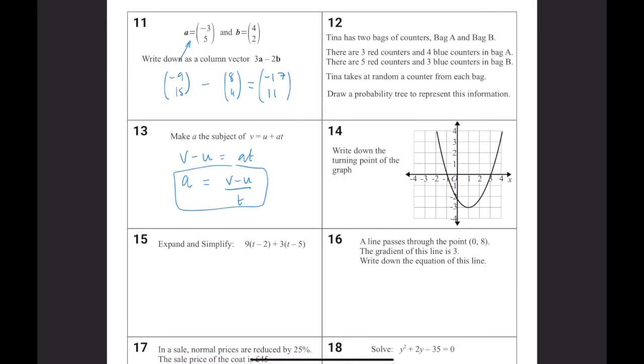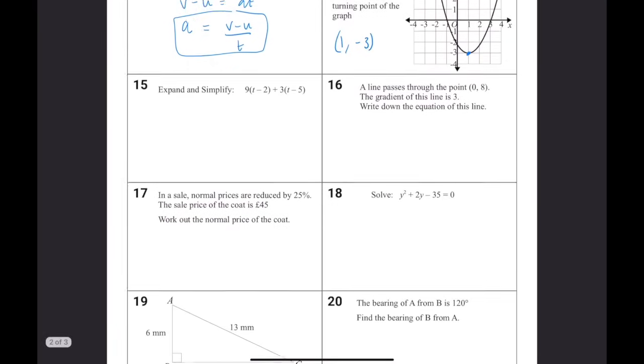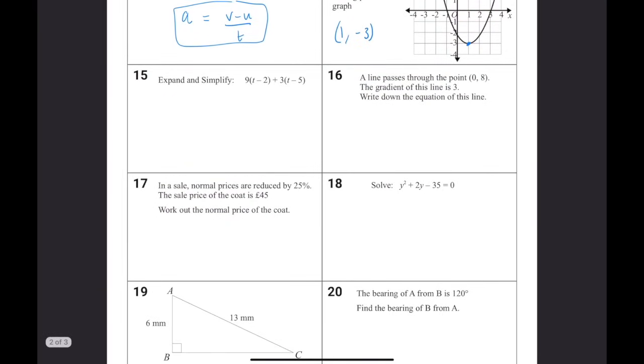Write down the turning point of the graph. That is just where the graph reaches its bottom point. So 1 minus 3. Expand and simplify this. So expand the brackets. 9T minus 18 plus 3T minus 15. So if you collect up the like terms, we're going to have 12T minus 18 minus 15 is going to be minus 33.